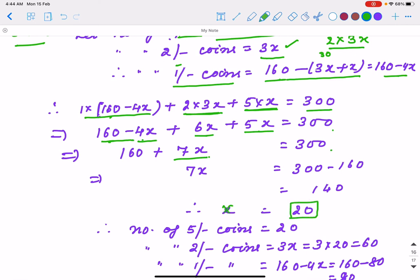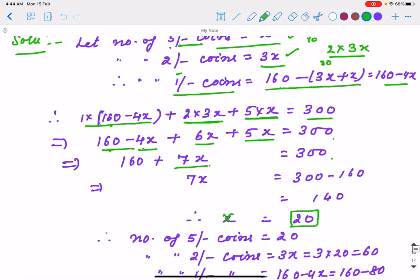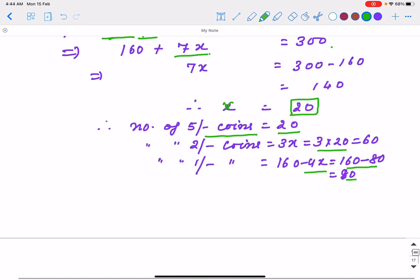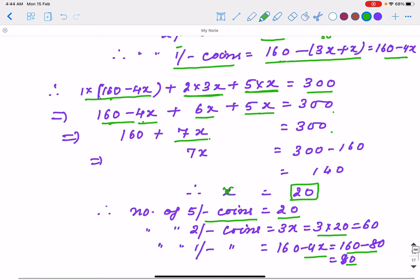What is x? It's the number of coins. So 5 rupee coins are 20. There are 20 five-rupee coins. 2 rupee coins are 3x, which is 3 times 20, equals 60. And 1 rupee coins are 160 minus 4x, which is 160 minus 80, equals 80. You can verify by adding all denominations—the total money is 300. This is how we solve the question.